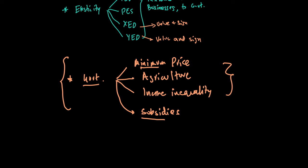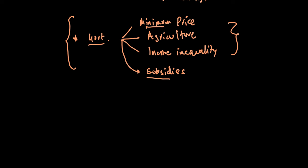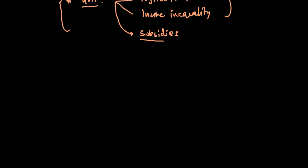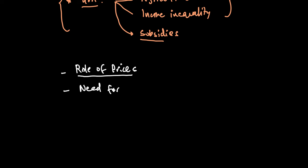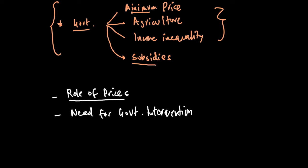Another topic to be safe on that you should prepare is the role of prices and the need for government intervention. Remember the role of prices is signaling, incentive, and rationing. So these are my key topics for microeconomics that I really want everyone to prepare — drawn from what I've seen tested in the last three to four papers and what could possibly come in the exam. Now let's look at macro.